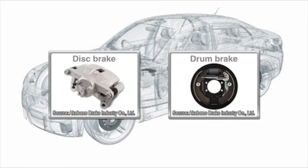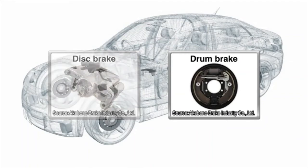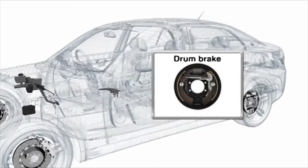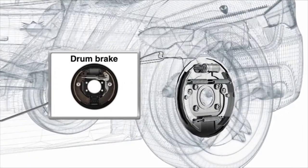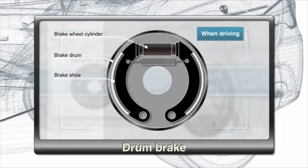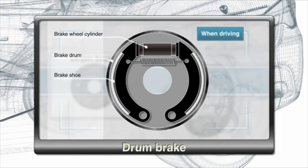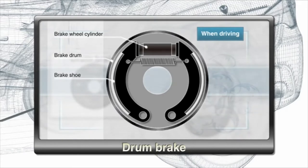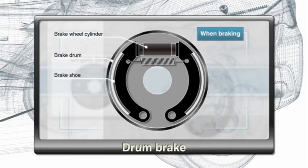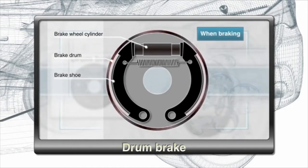Brakes come in two types: drum brakes and disc brakes. Drum brake parts include the wheel cylinder, brake shoe, and shoe spring, anchored to a backing plate and mounted inside the drum. The brake assembly is attached to the wheel. When hydraulic pressure is transmitted to the wheel cylinder, the brake shoe is pressed against the rotating drum, causing the wheel to stop.